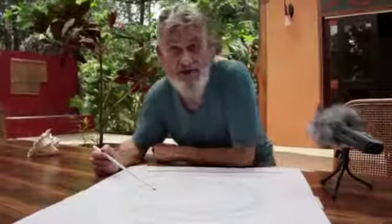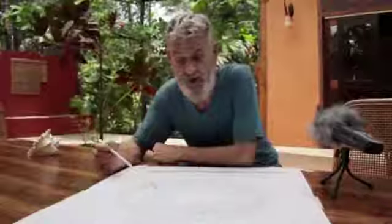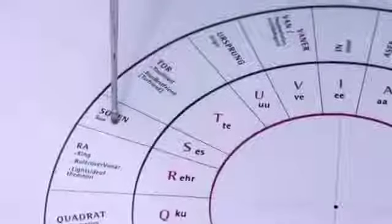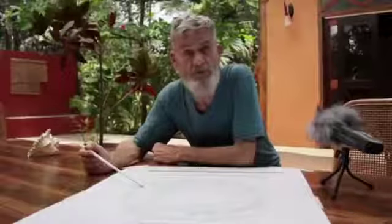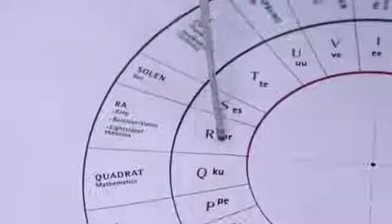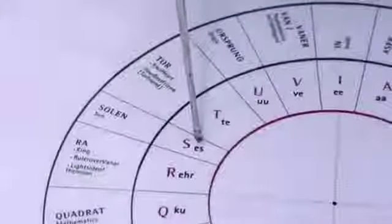The next sound is S — A-S. S means Sulin, and Sulin in root language means sun. In English we call it sun. So the sound R or Air is the moon, and S is the sun — Sulin.